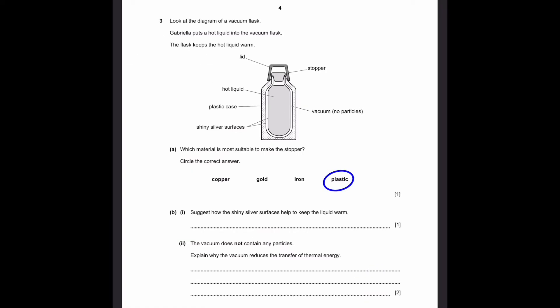Part B: Suggest how the shiny silver surfaces help to keep the liquid warm. Shiny silver surfaces actually reflect radiation. So, the radiation of heat coming from the hot liquid will reflect back into the vacuum flask or it will reflect back into the hot liquid. The shiny silver surface reflects heat back into the container.